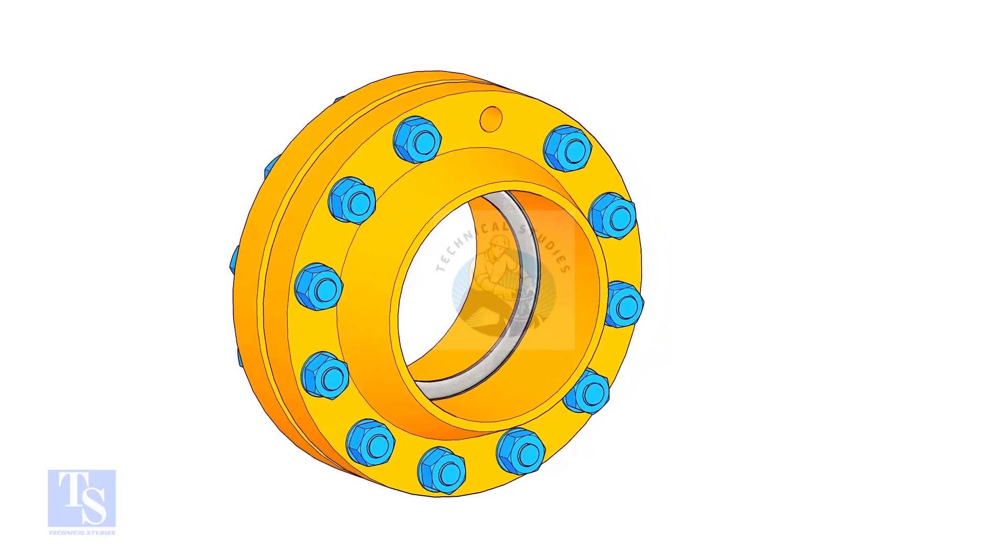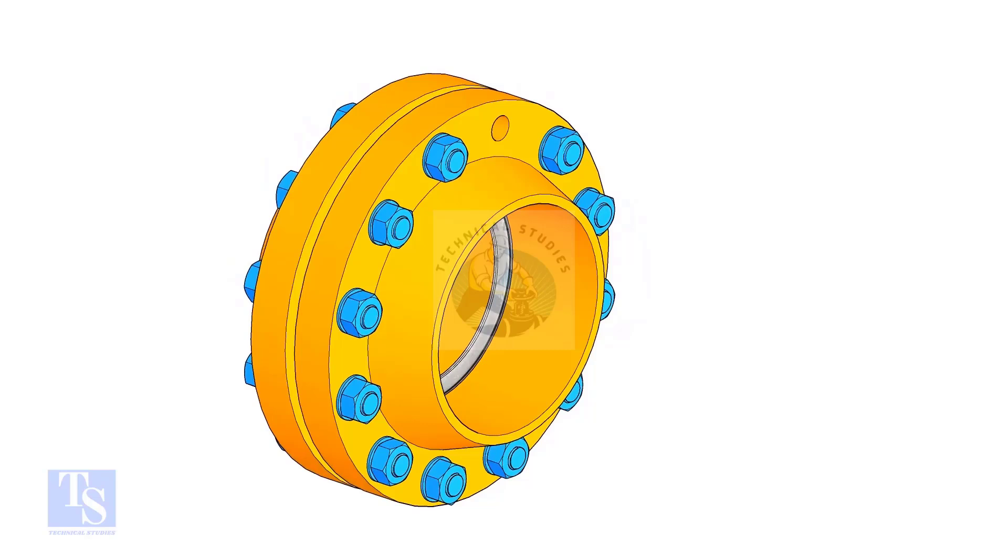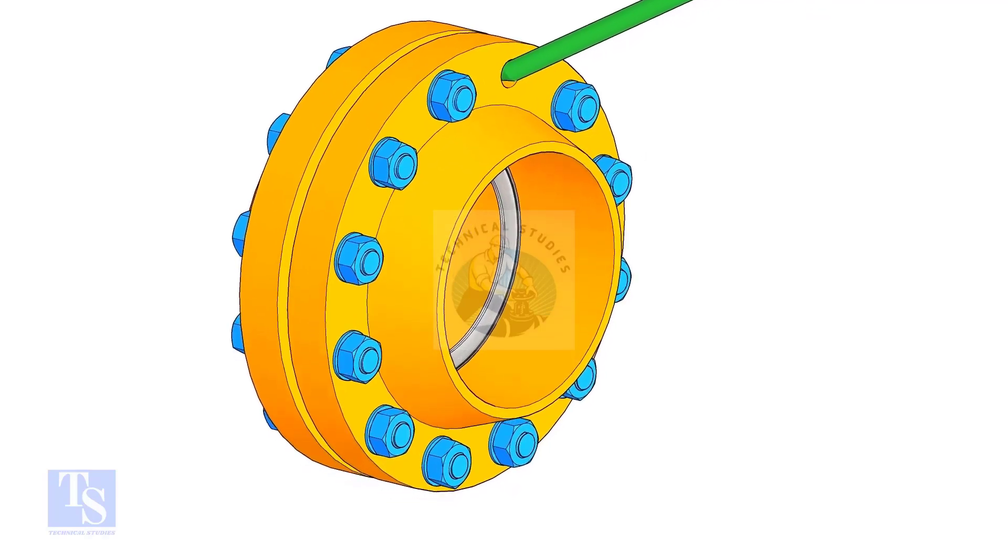Use a lever bar to align the holes and the outer face of the flanges. Now lift the gasket to its position. You can use a piece of welding rod.